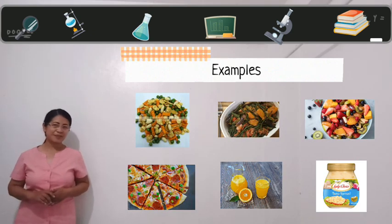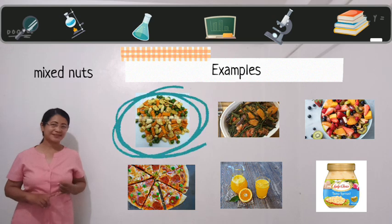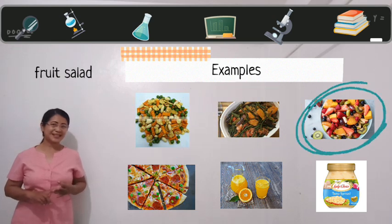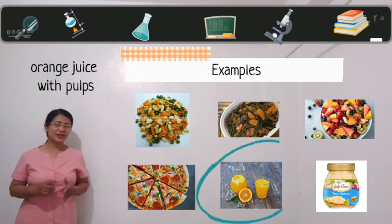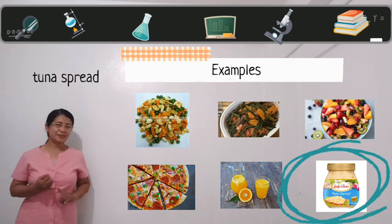Some of these examples are mixed nuts, peanut butter, fruit salad, pizza, orange juice with pulp, and tuna spread.